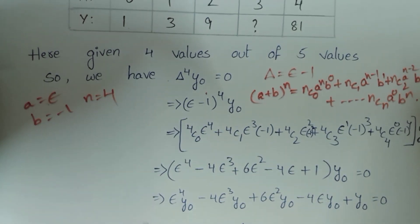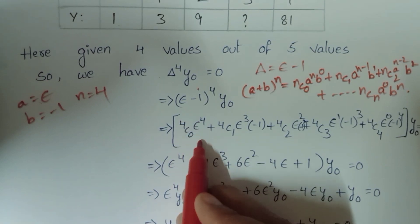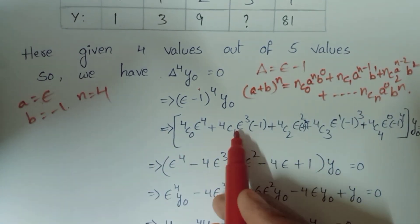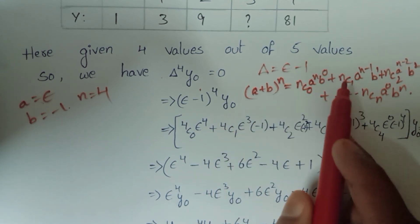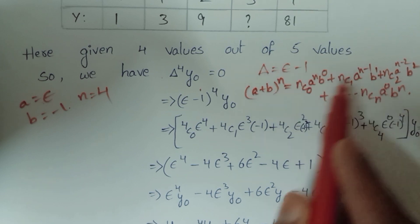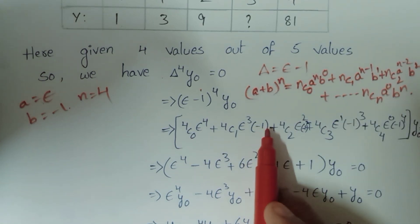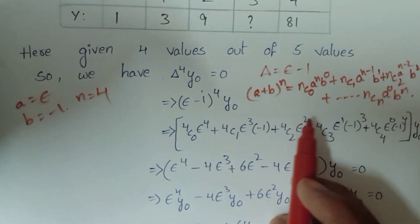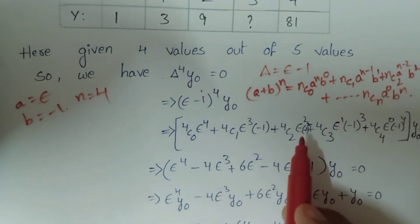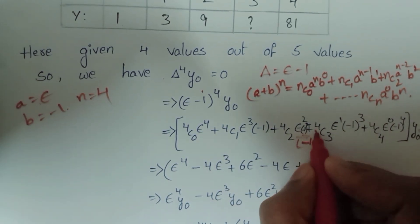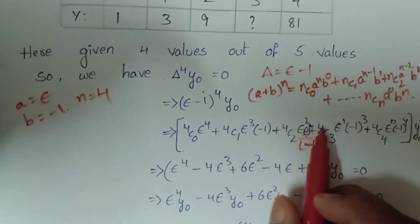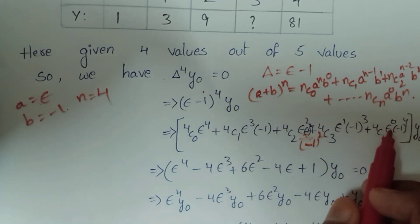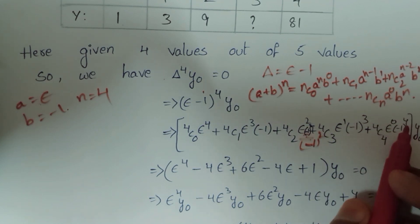With a equal to e, b equal to minus 1, and n equal to 4, substitute into the formula: 4C0·e^4·(minus 1)^0 plus 4C1·e^3·(minus 1)^1 plus 4C2·e^2·(minus 1)^2 plus 4C3·e^1·(minus 1)^3 plus 4C4·e^0·(minus 1)^4.